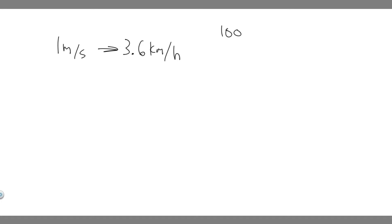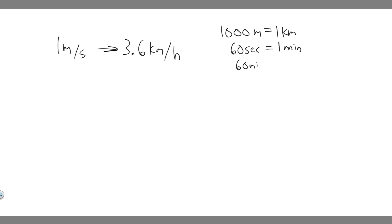We know that there are 1,000 meters for every one kilometer — that's a conversion you have to know. We're also going to convert from seconds to hours using two steps: seconds to minutes, then minutes to hours. There are 60 seconds for every one minute, and 60 minutes for every one hour.